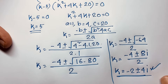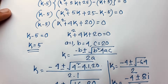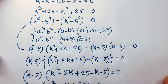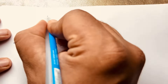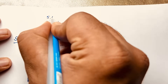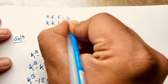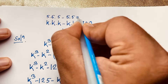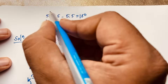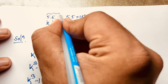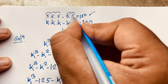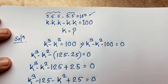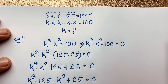This is our final answer to this math Olympiad question. Let's check: with k equals 5, it will be 5 times 5 times 5 minus 5 times 5, which equals 125 minus 25, giving 100. That's correct! Thank you all. If you enjoyed this video, please subscribe to our channel for other interesting videos. Goodbye, take care.